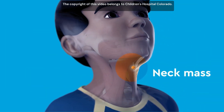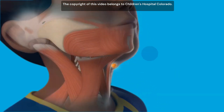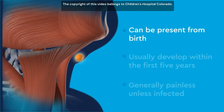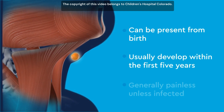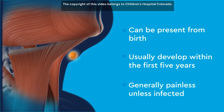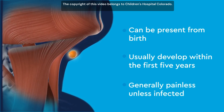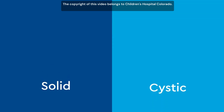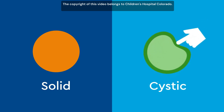A neck mass is a bump or lump on the neck. Neck masses can be present from birth but usually develop within the first five years of your child's life. They are generally painless unless infected. There are two types of neck masses: solid or cystic. A solid mass is a dense lump of tissue, while a cystic mass is a sac that fills with fluid.